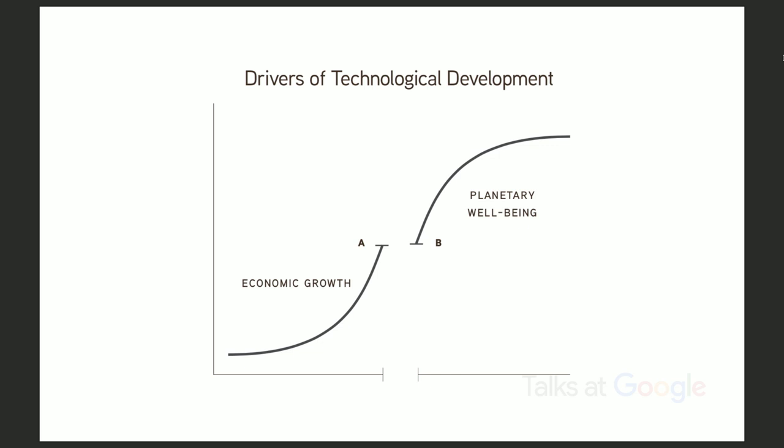One thing I think about is the basic drivers of technological development. In Epoch A, this was all driven by economic advantage — what was going to make the most accrual for corporations. Obviously that hasn't stopped in essence. But over time, I would like to see — and I think our survival depends on — making the issues of planetary well-being and human well-being and the well-being of other species the drivers that direct us: what problems are we going to look at, what problems are we going to solve?